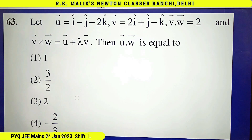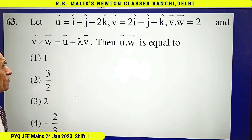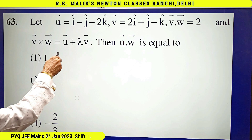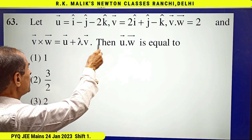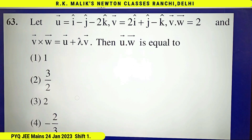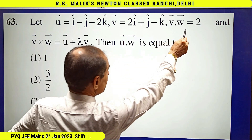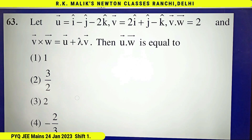In this case, if we are able to find the value of λ, then once λ is found, to find the value of u·w I will take the dot product with w on both sides, and with the help of v·w I will get the value of u·w. Therefore the very first thing will be to find the value of λ.